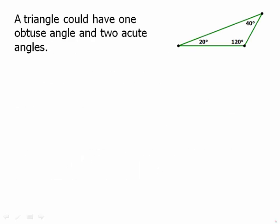A triangle could have one obtuse angle and two acute angles. So, we have a diagram here. And incidentally, all the diagrams in these lesson videos are drawn to scale. So, that is a scale diagram of a triangle with 20, 120, and 40 degrees.